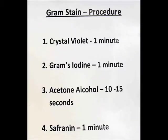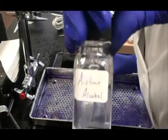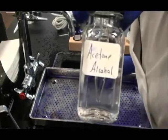My next step is to apply the decolorizer, acetone alcohol. What this step will do is remove the purple stain from my Gram-negative cells.